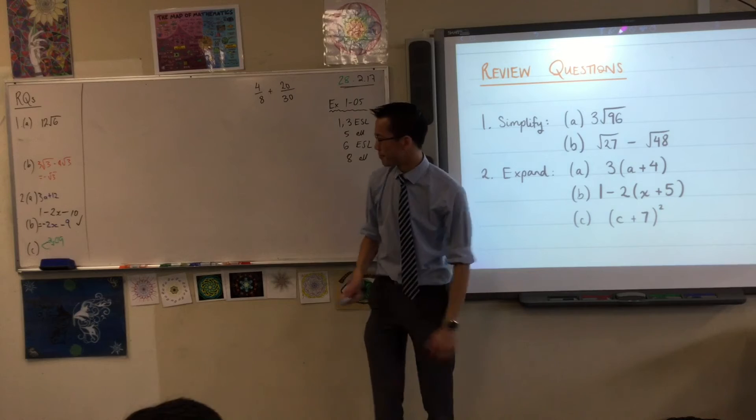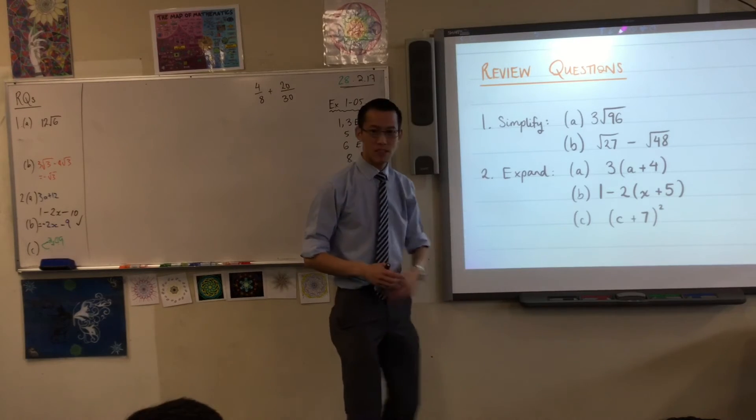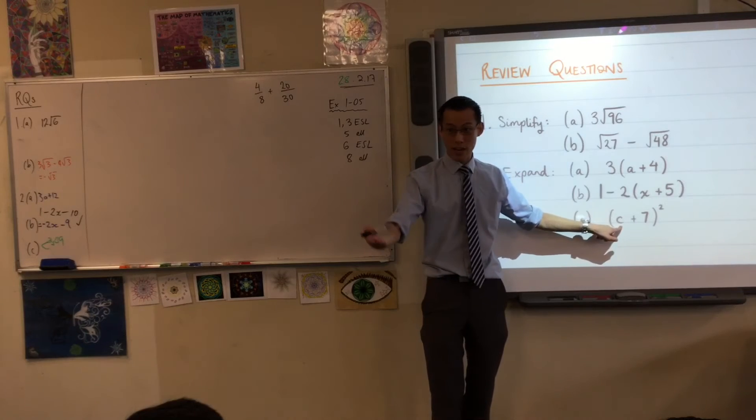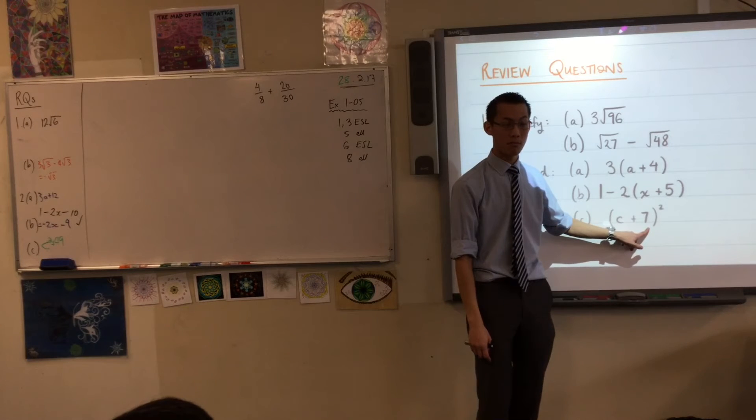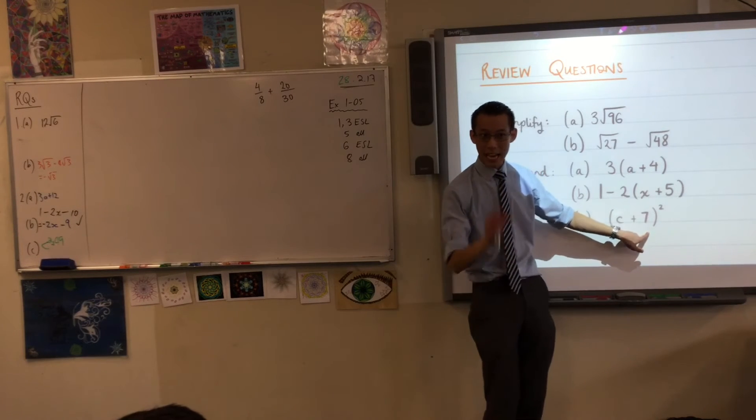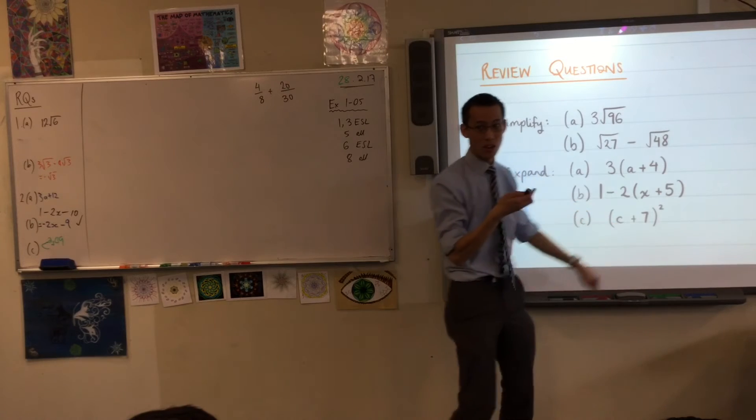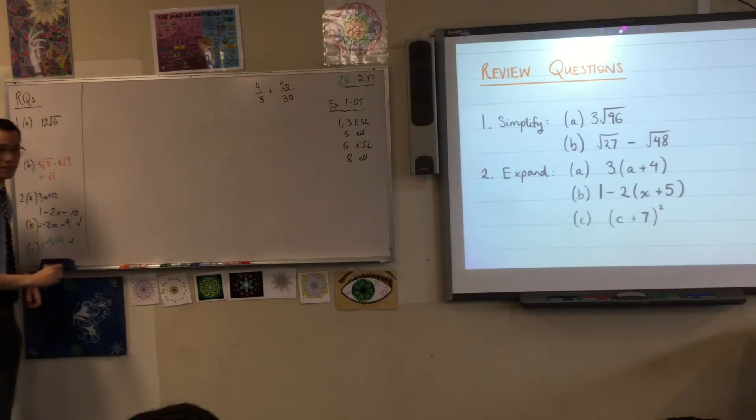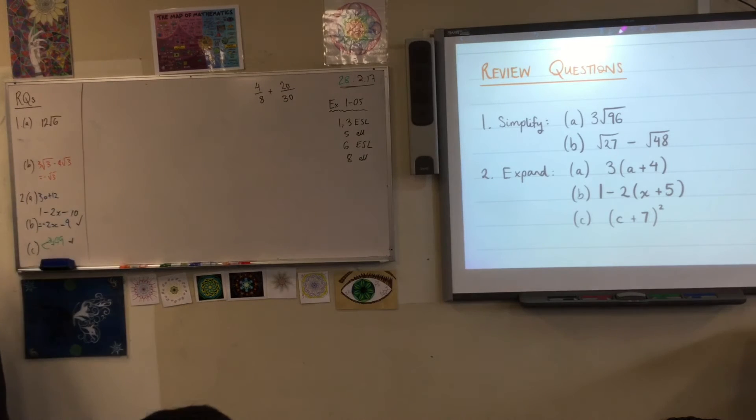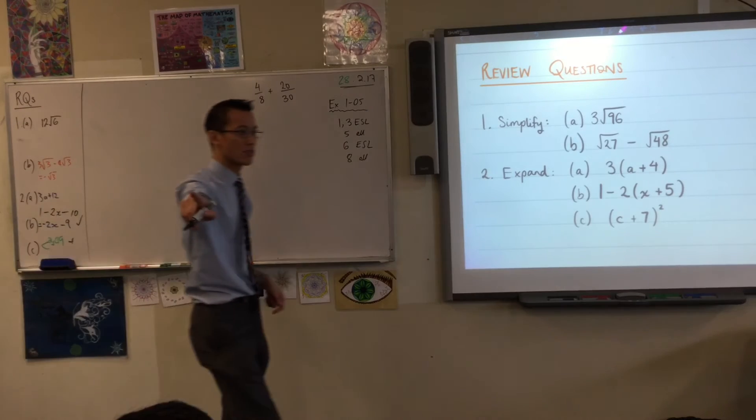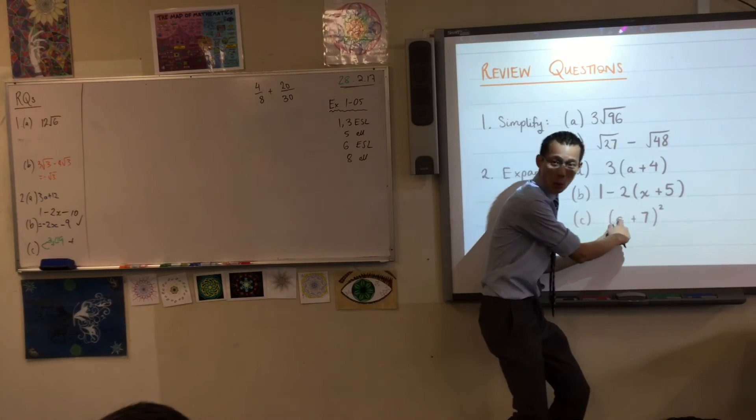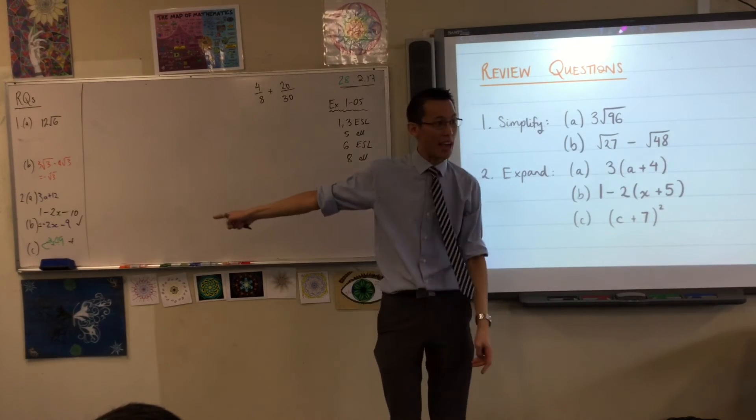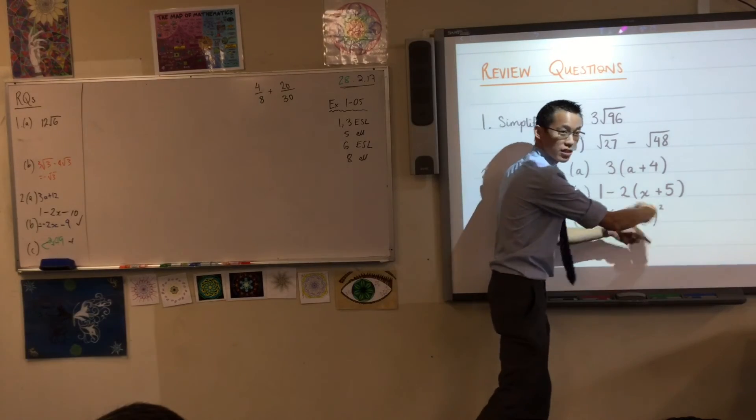Now, last one. C squared plus 49. You square that, you get C squared. You square that, you get 49. What do you think? Now, I think it's actually missing a tiny thing on the end. Can someone suggest to me, what is it missing? Any takers? Yeah, Jennifer. Yeah, okay. So, this pair of numbers here, not only do they get squared independently on their own, those bits are right, but in addition to that, they actually interact with each other.